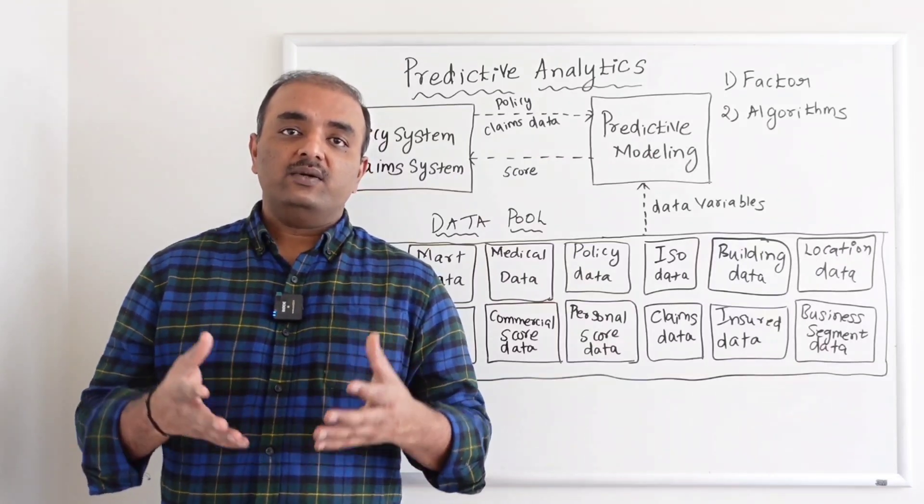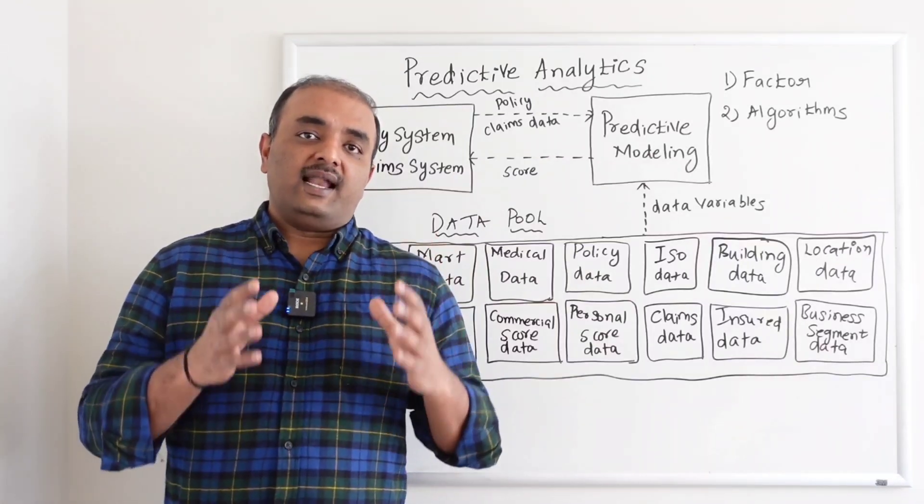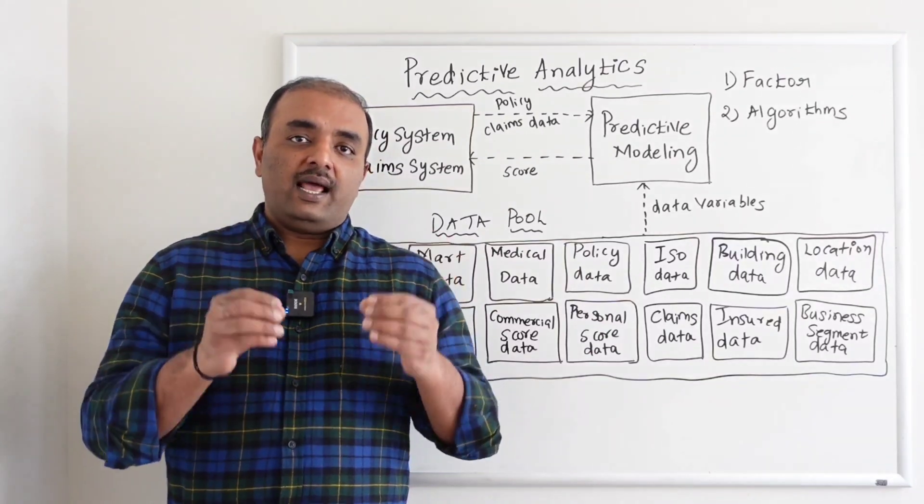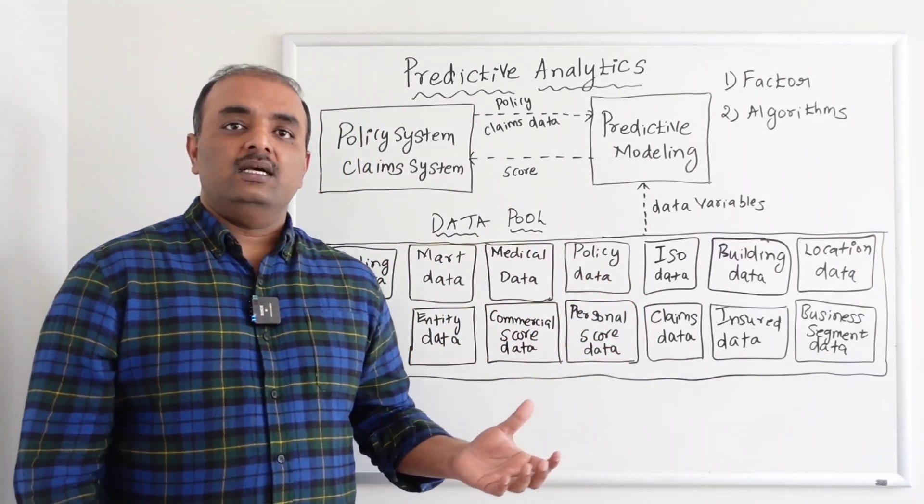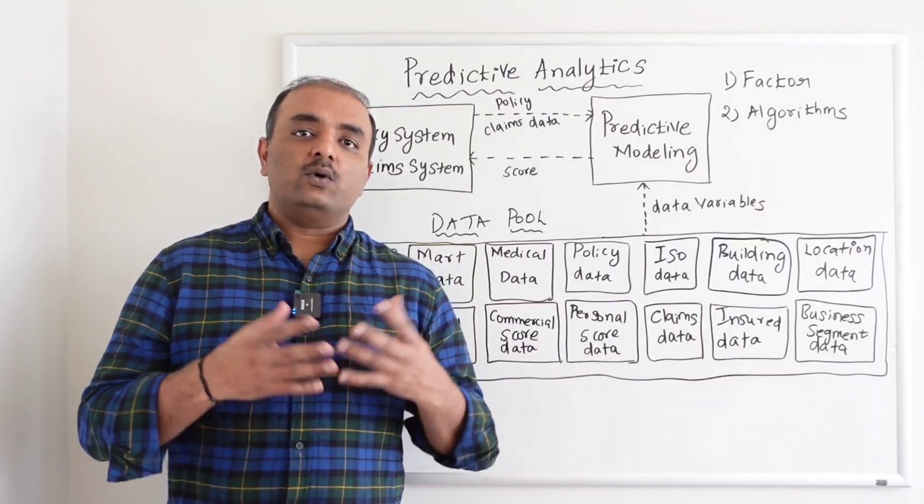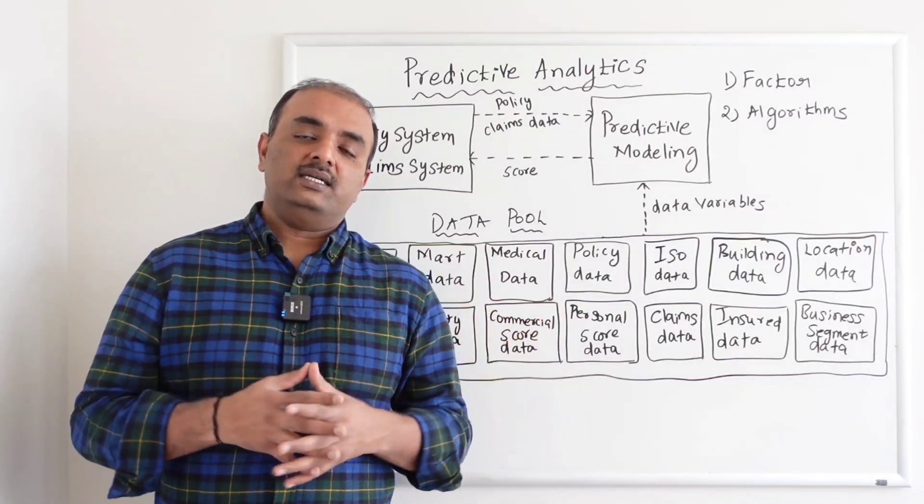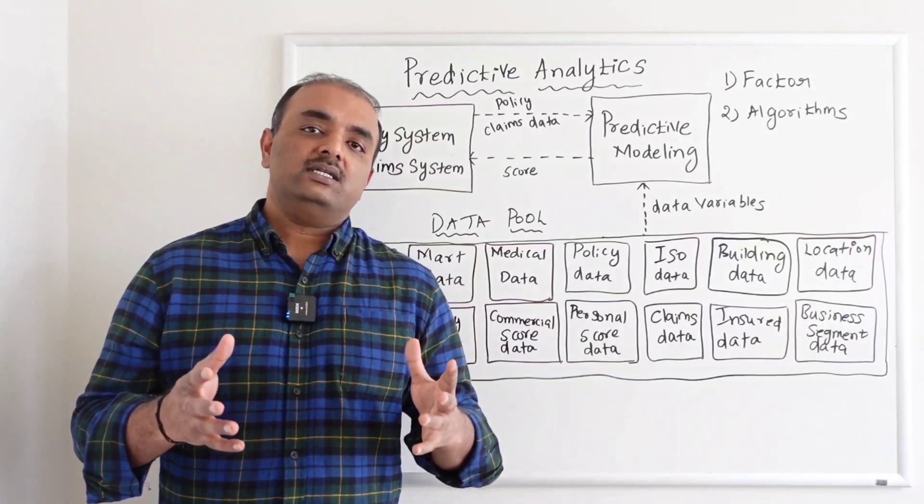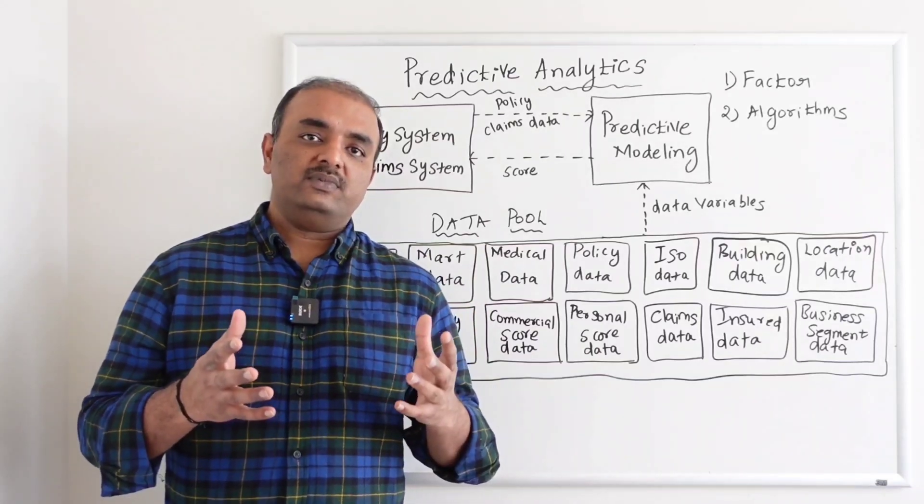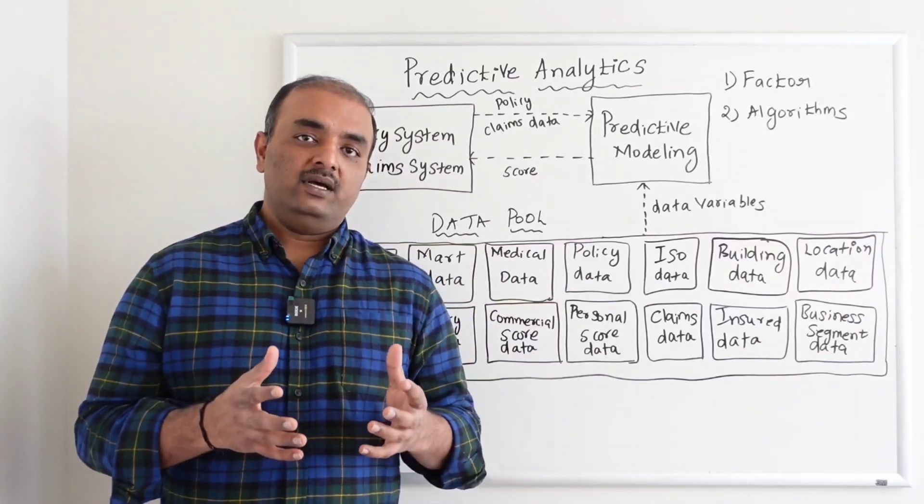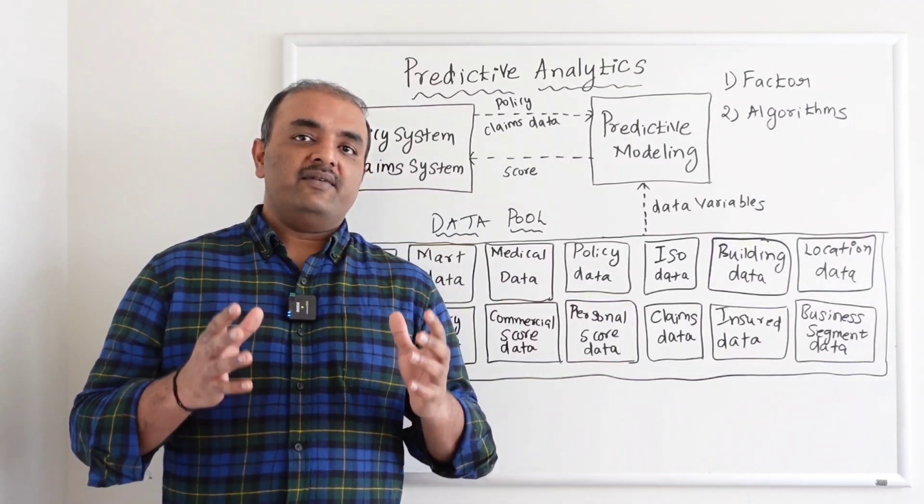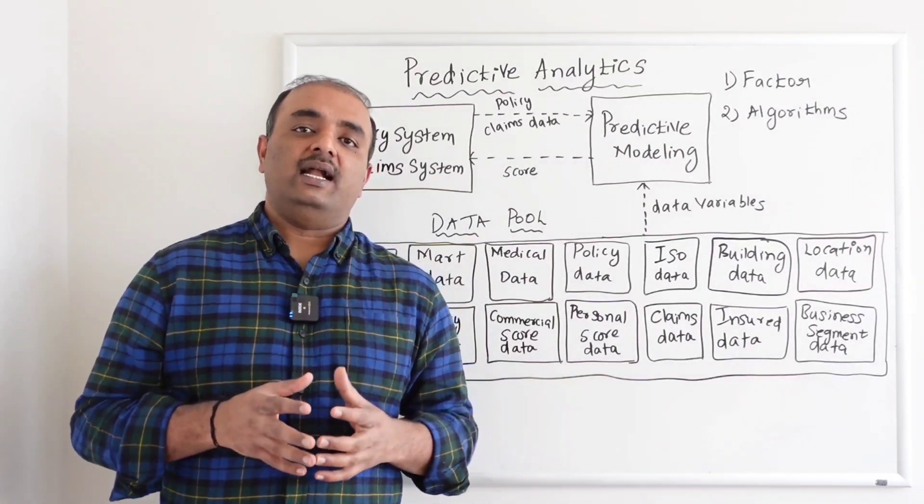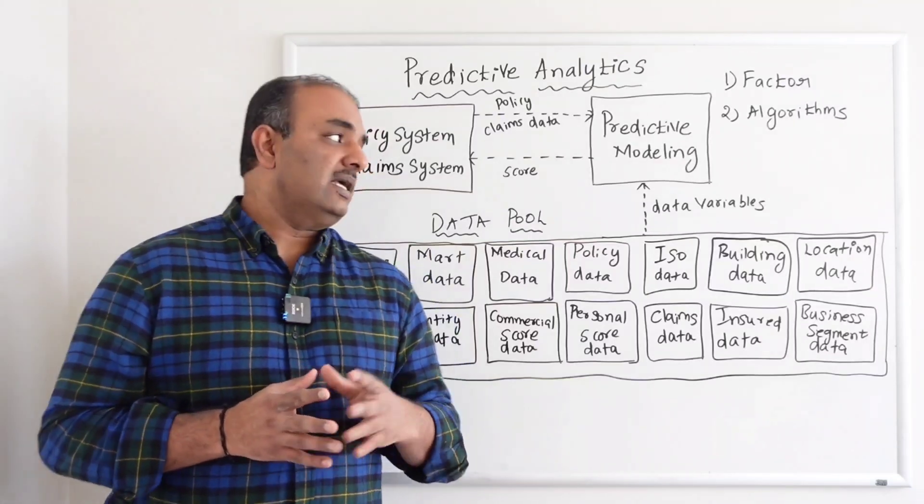So we do not - instead what we are trying to do is take the claim, review the claim based on the different data sources, same thing that we did for policy, and then come up with the score. So between one to hundred, if the score is 20, which means this claim is a simple claim and can be processed automatically. If the claim is having a score of 80, that means an adjuster has to look at it.